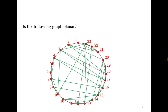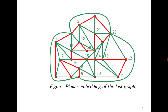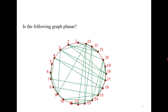This next graph has a small order, but it is still very hard to check manually whether it is planar or not. That's why in this chapter we are going to see the necessary and sufficient conditions to check the planarity of a graph. This graph is indeed planar, and here is its planar embedding.